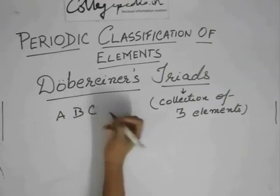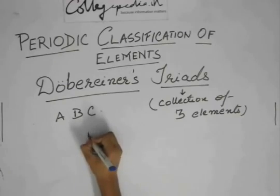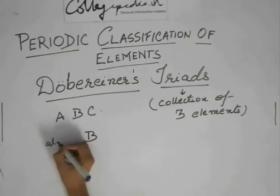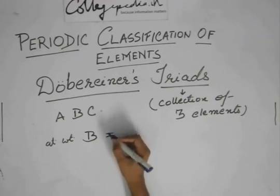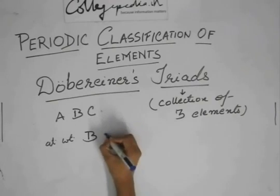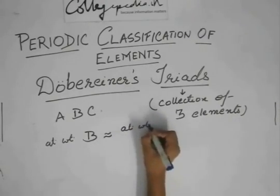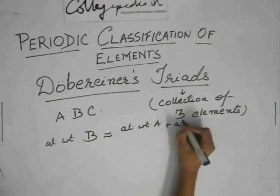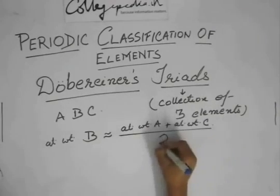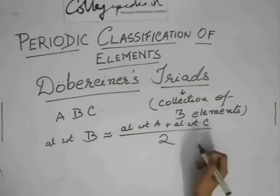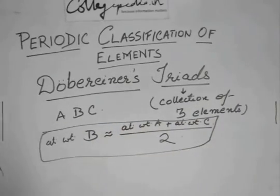And he observed that the atomic weight of B is roughly equal to the average of atomic weight of A and atomic weight of C. That is, atomic weight of A plus atomic weight of C divided by two. So this was his formula for classification.